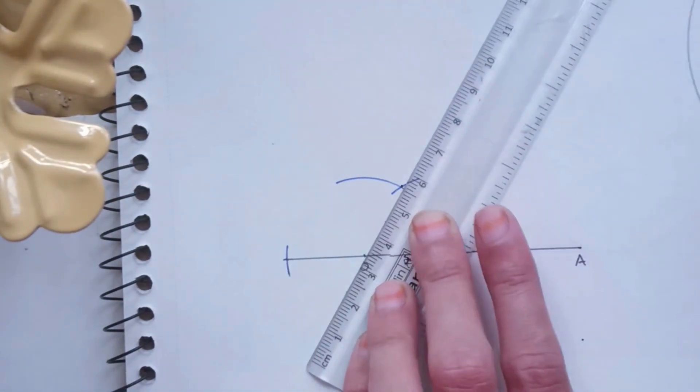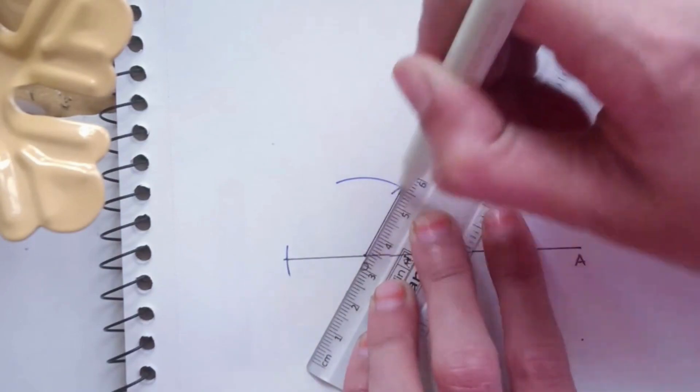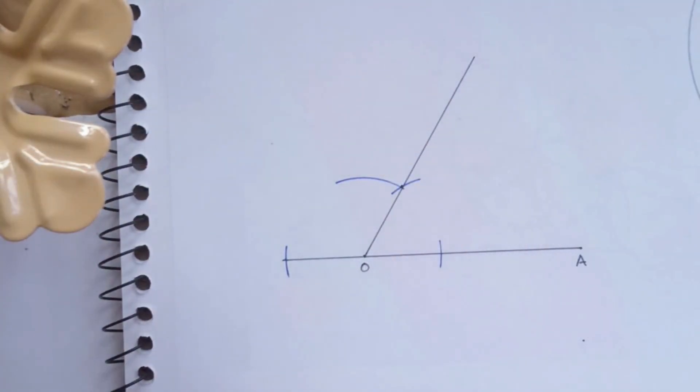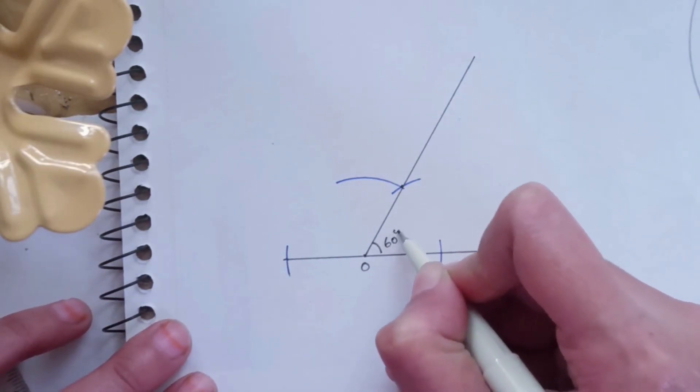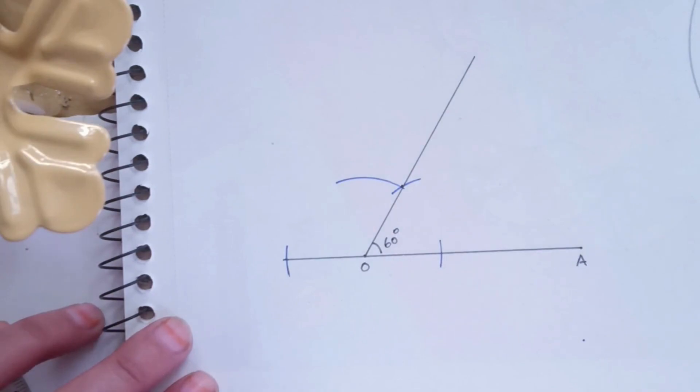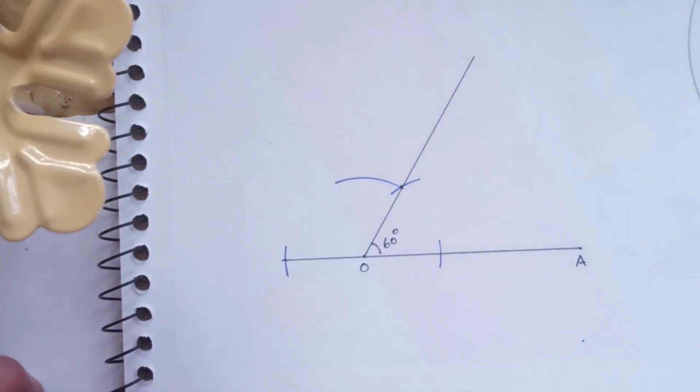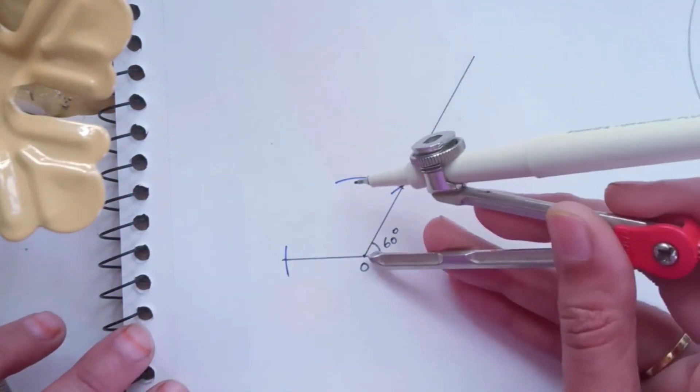Now we will join this point with O. So in this way we get a second line. Now this angle between these lines will be a 60 degrees angle. That's how we get a 60 degree angle.